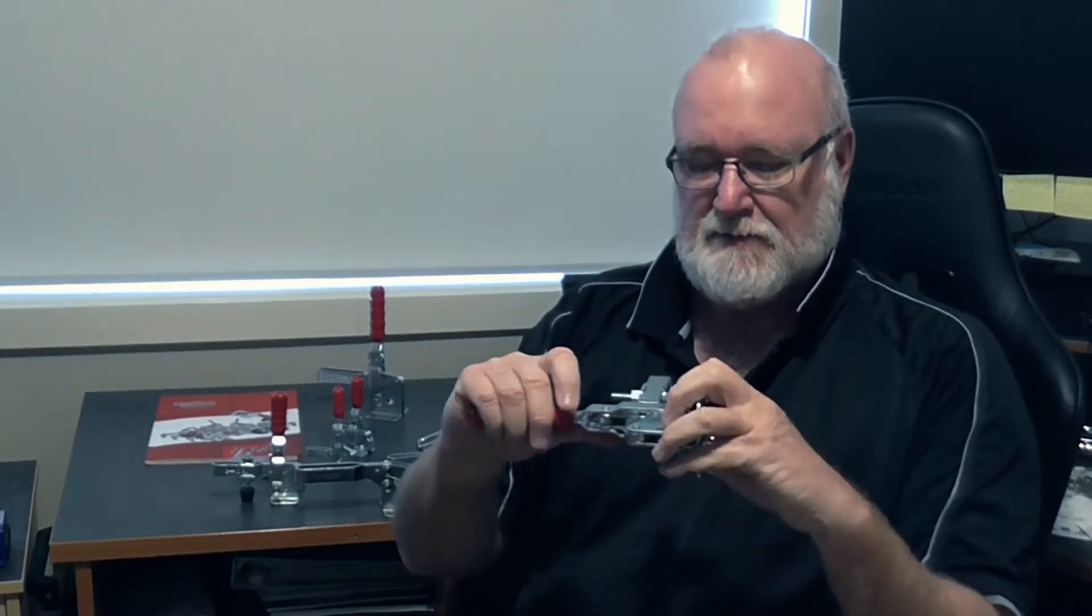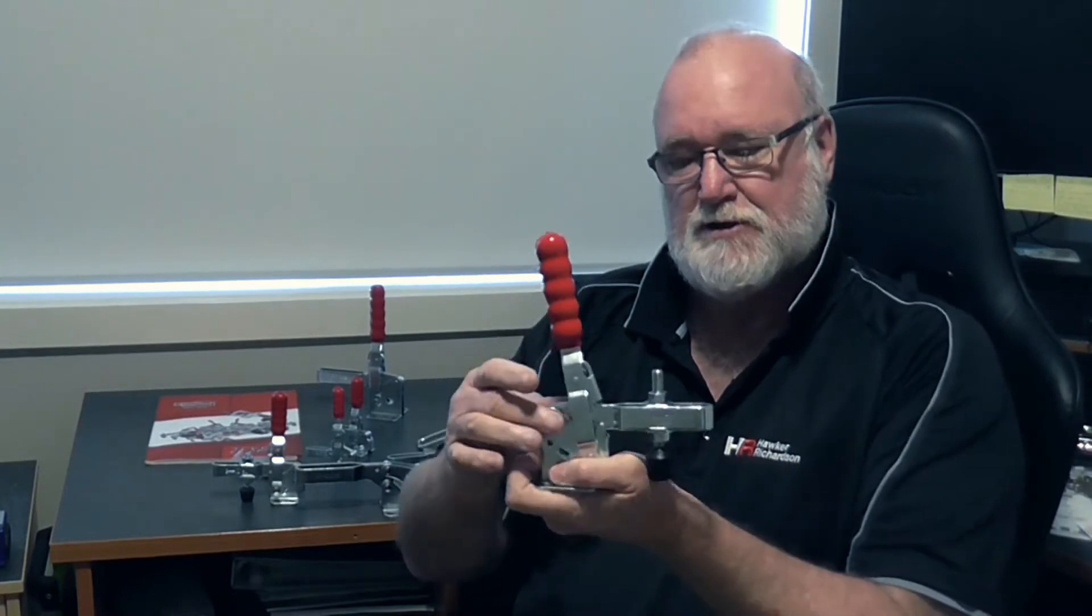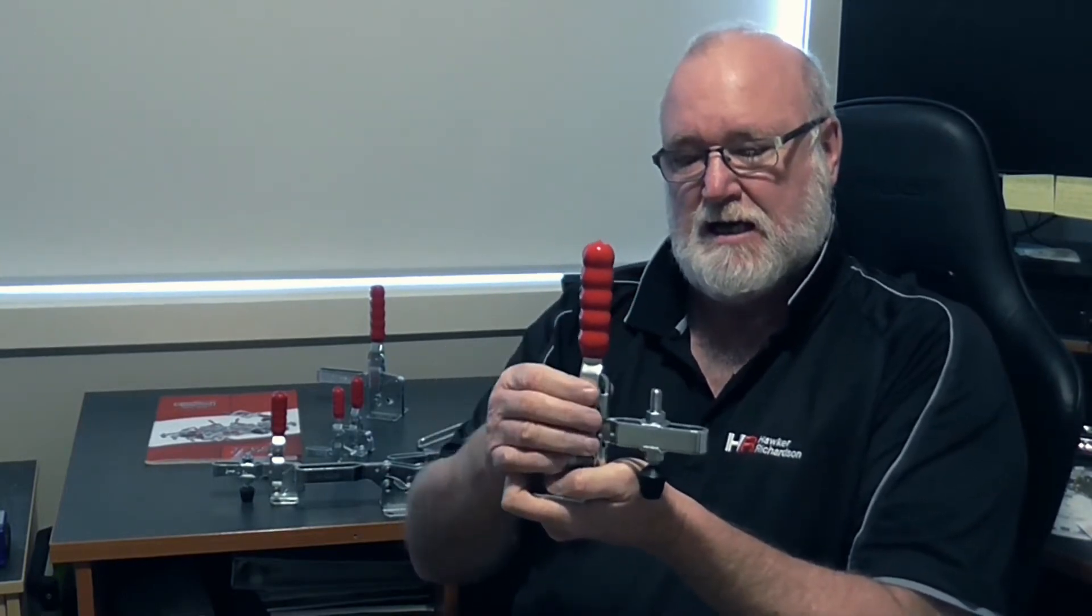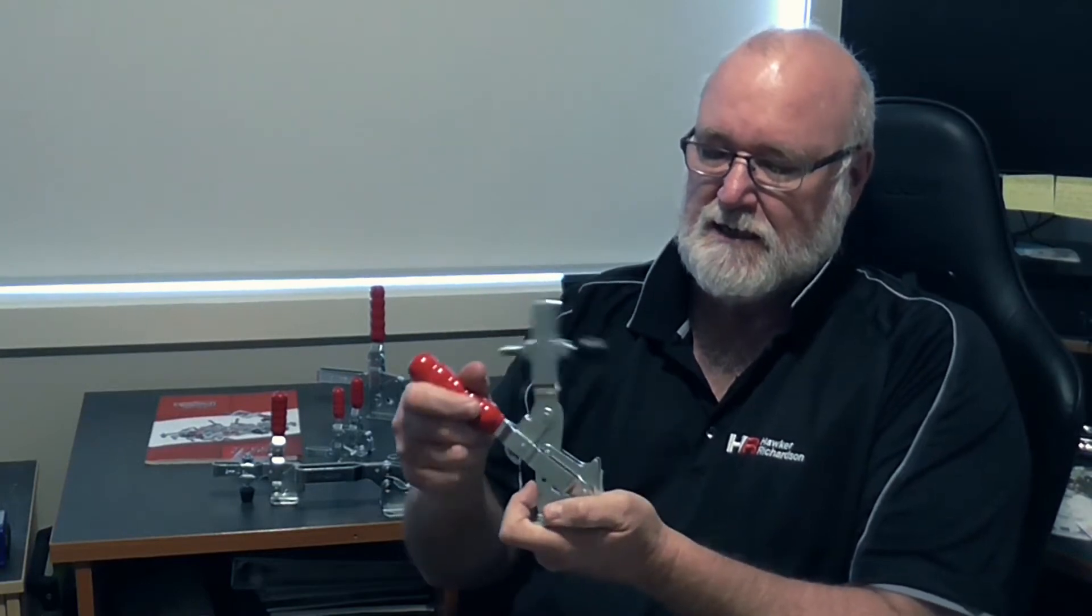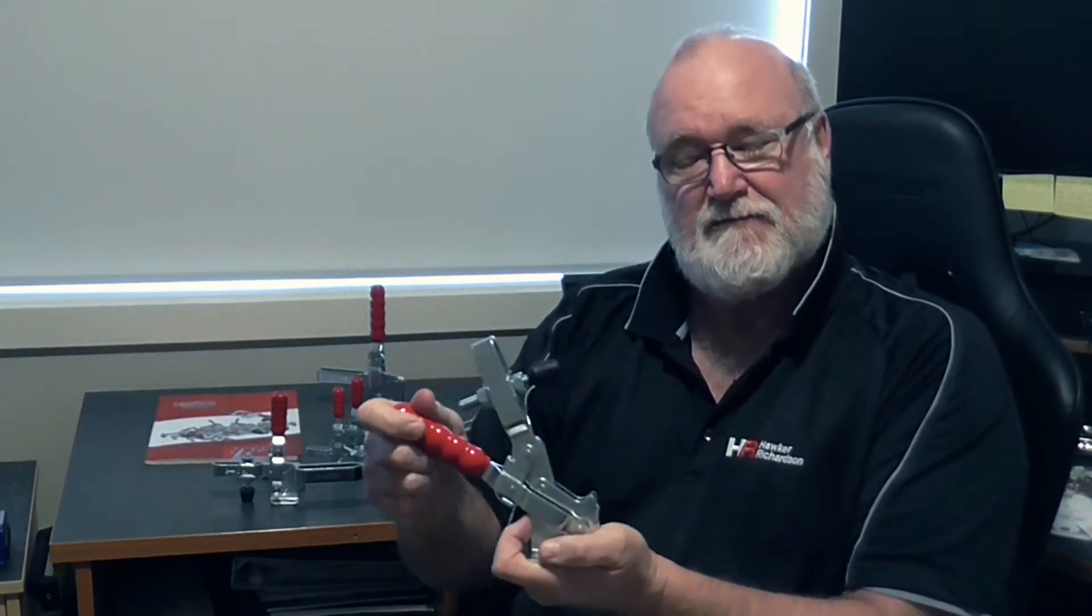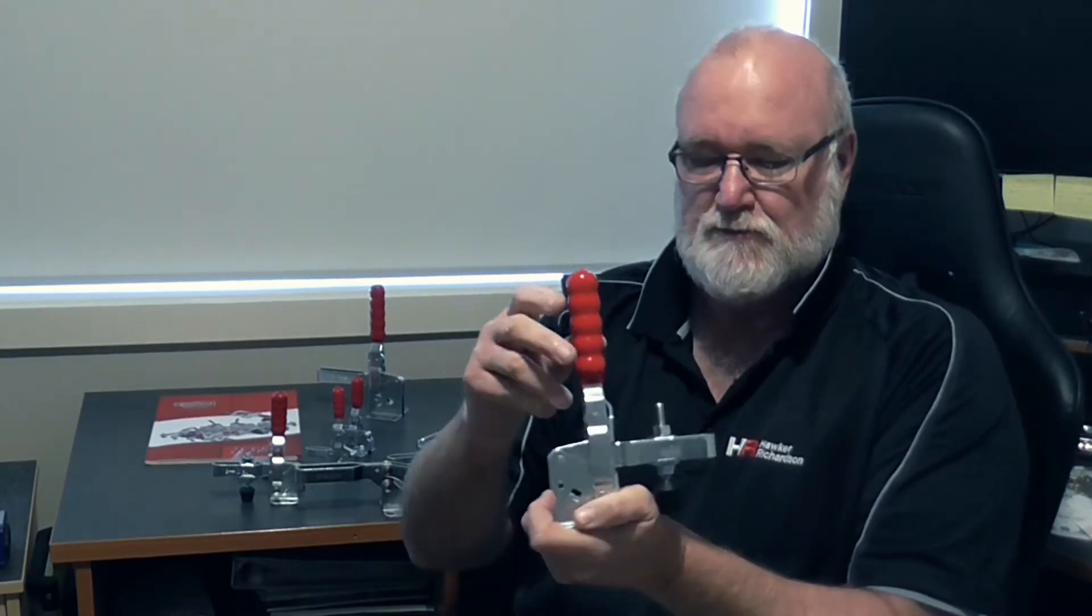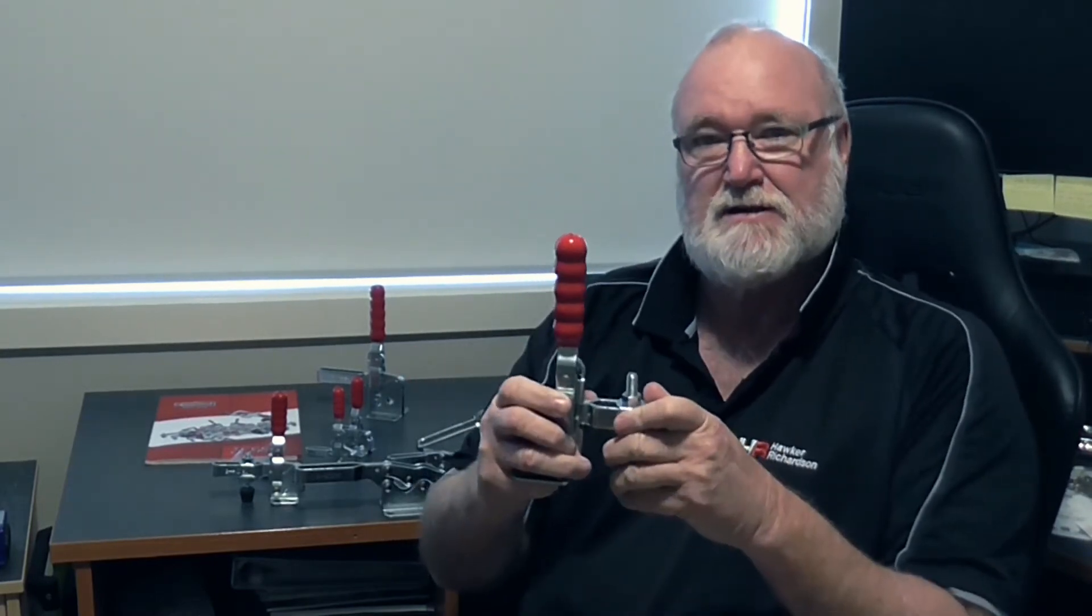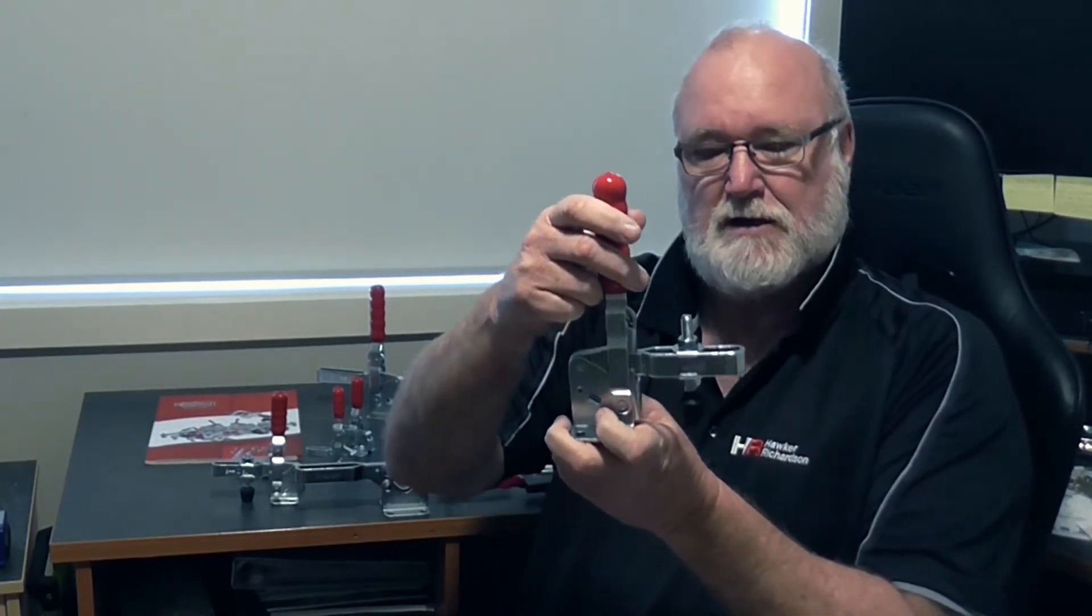All of the Good Hand clamps have the rivets formed on process controlled machinery which gives precise and repeatable forming of the rivet, which in turn gives it a very easy action and no lateral movement whatsoever. These clamps just feel solid and heavy and they will give millions of cycles of repeatable work holding.